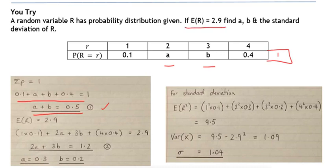Using that information tells us that A plus B has to be equal to 0.5. And then using the knowledge that the mean or expected value of R is 2.9, we can set up our second simultaneous equation: 1 times 0.1, 2 times A, 3 times B, and 4 times 0.4, as written out here, is equal to 2.9.